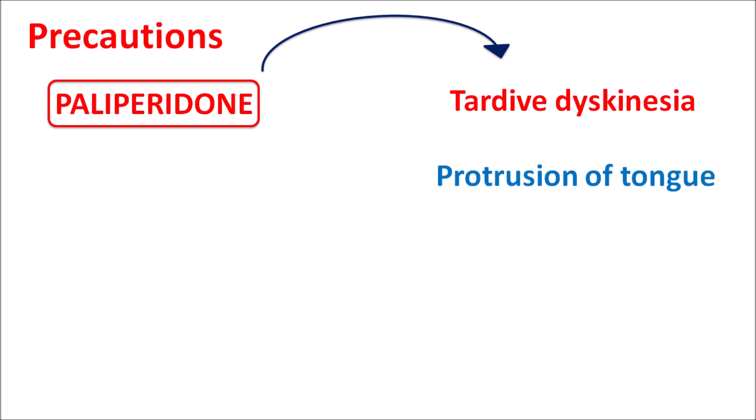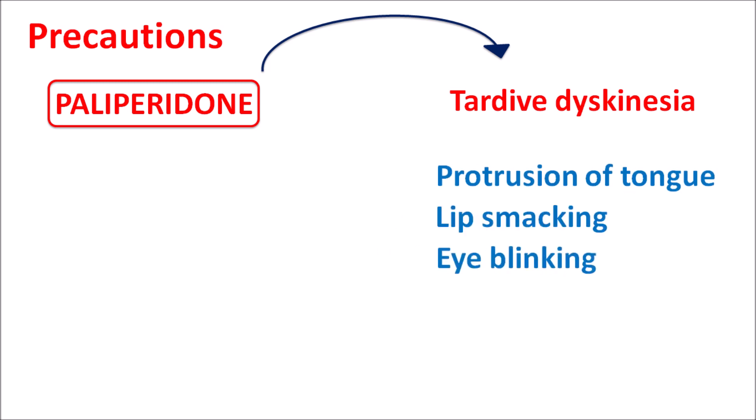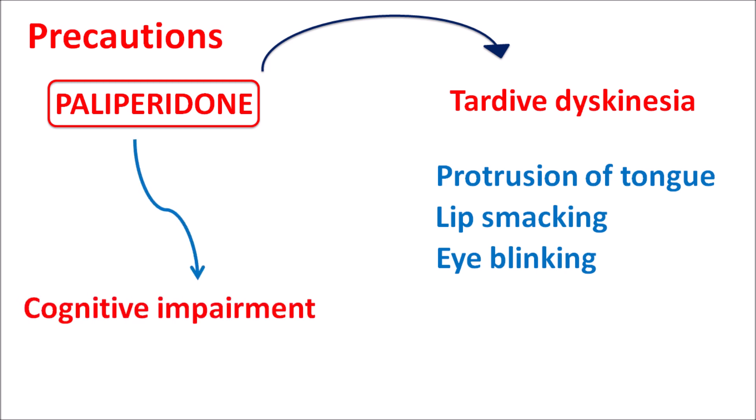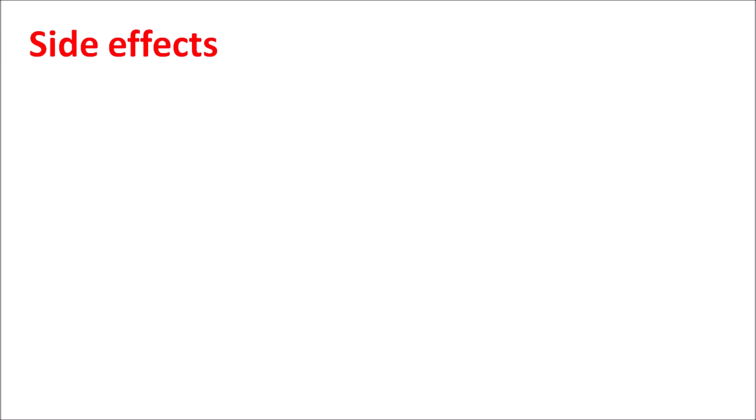Paliperidone can also produce dysphagia (difficulty swallowing) and narrowing of the GI tract, resulting in gastrointestinal obstruction. Another important side effect is tardive dyskinesia, which is largely irreversible — patients may exhibit protrusion of the tongue, lip smacking, and eye blinking. This drug can also produce cognitive impairment, and in patients with dementia it can produce cerebrovascular disorders.